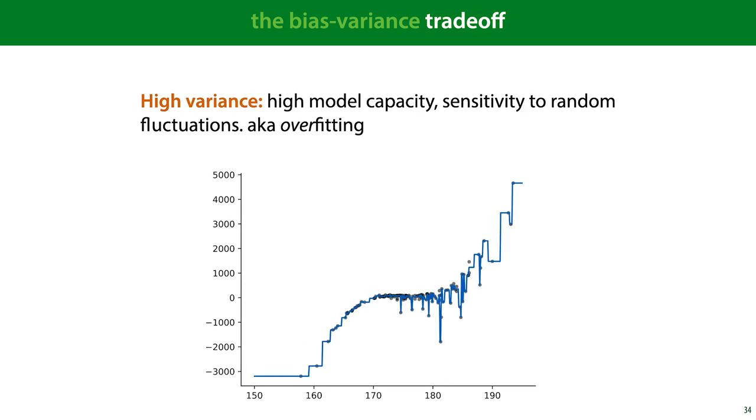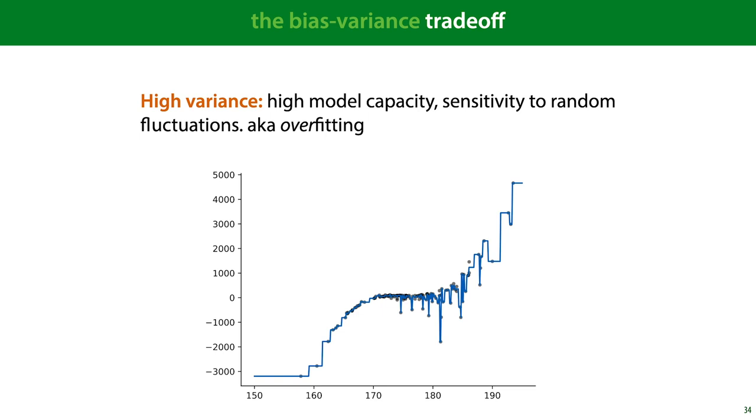Models with high variance are those with enough flexibility to capture all the details in the data, which makes them prone to overfitting. And overfitting means that you are sensitive to random fluctuations, which gives you this high variance that we saw in the mean squared error. To make this trade-off, we need to reduce the bias if we suspect that our model has high bias, and reduce the variance if we suspect that model has high variance.